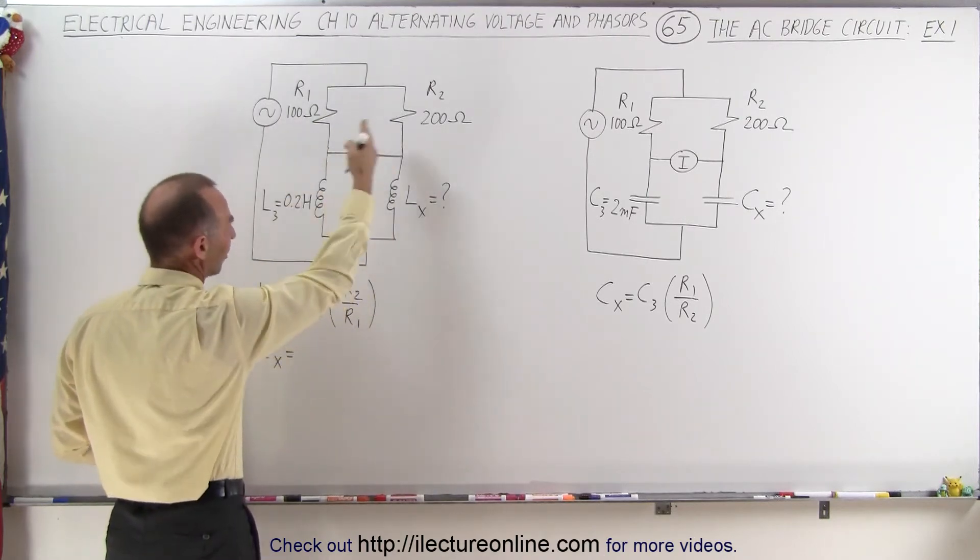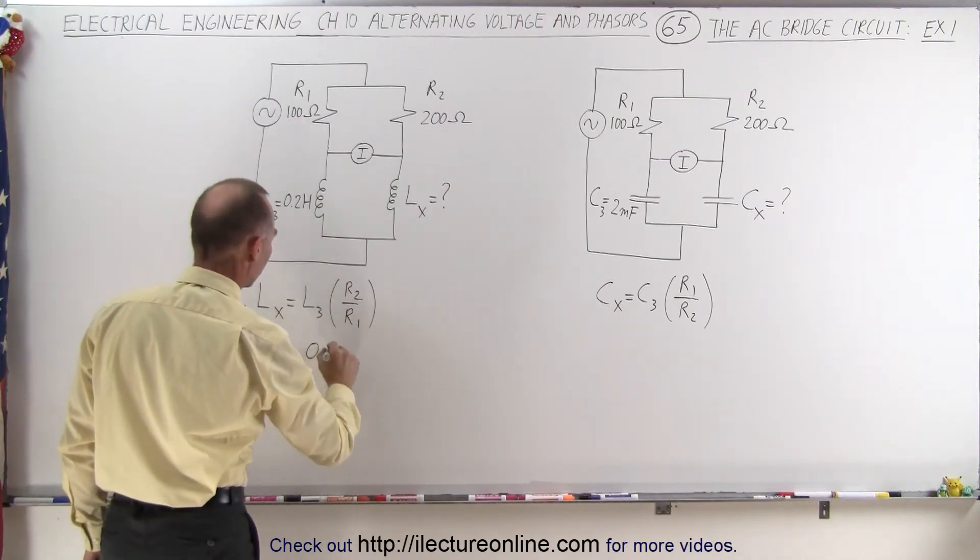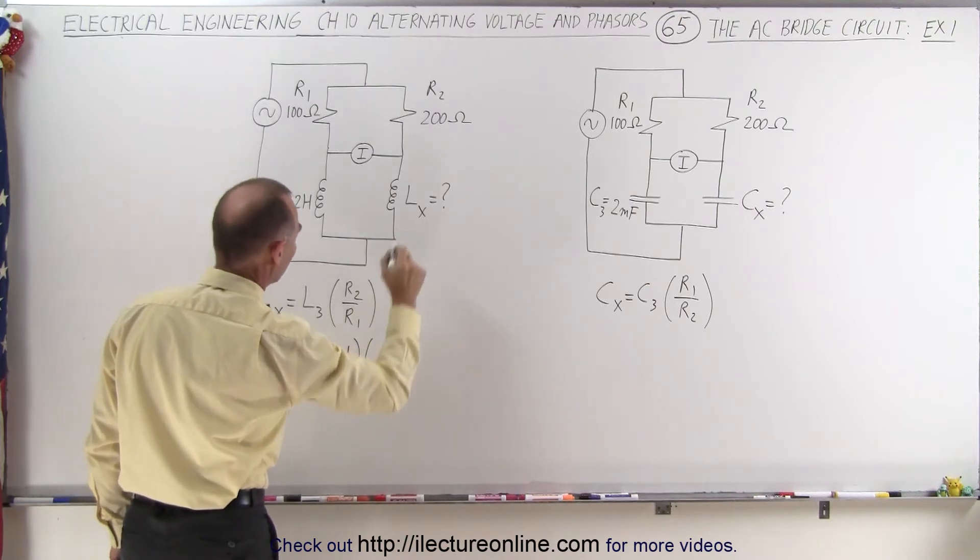R3, and R4, so to speak, or Z1, Z2, Z3, and the unknown Z sub X. So L sub 3 is 0.2 Henry's, and we multiply times the ratio of R2,